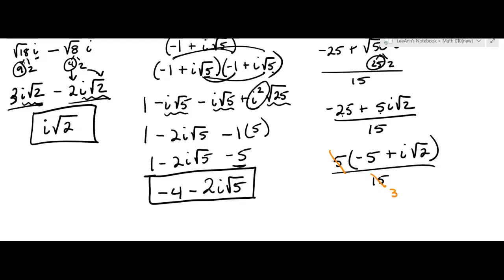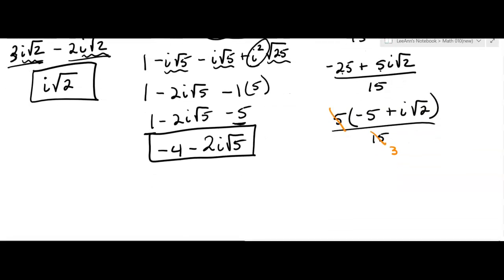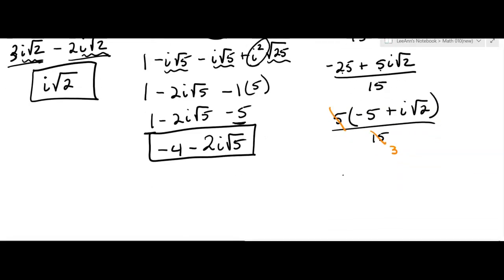Okay, so here comes the final answer in a plus bi form. I'm going to have negative 5 over 3. That's the real part. Plus, now how are they going to write it? I would write it the square root of 2 over 3i. I don't know if they're going to put the i in front or in the back. I'll check. Okay, I checked. They put it in the front.